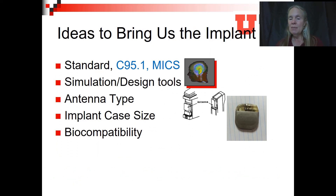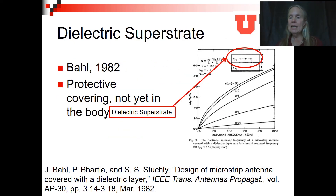With a standard, simulation and design tools, a good antenna type, and an understanding of how the implant case size impacts antenna performance, we next look at biocompatibility. Biocompatibility is seen in two ways: one is the materials the antenna is built from, where plastics and ceramics were appropriate. Also, the SAR guideline — which tells us we can't have super high power right next to the antenna inside the body — led us to use a dielectric superstrate. First seen in 1982, the dielectric superstrate is a protective covering for an antenna. It separates the body so that high SAR values are near the antenna in the plastic rather than in the body itself.